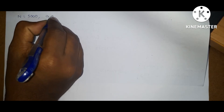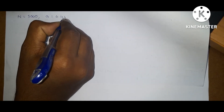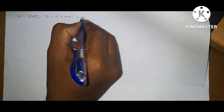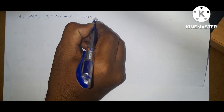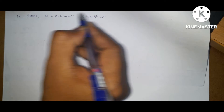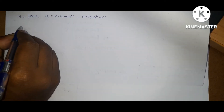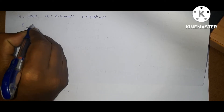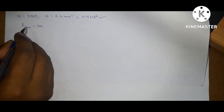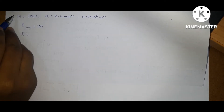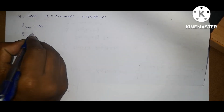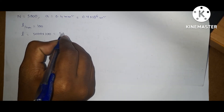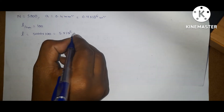Cross-section area is given as 0.4 mm square. Converting to meter square gives 0.4 into 10 power minus 6 meter square. The mean length per turn is 100 meters, so total length is equal to number of turns into length per turn: 5000 into 100 gives 5 into 10 power 5 meters.